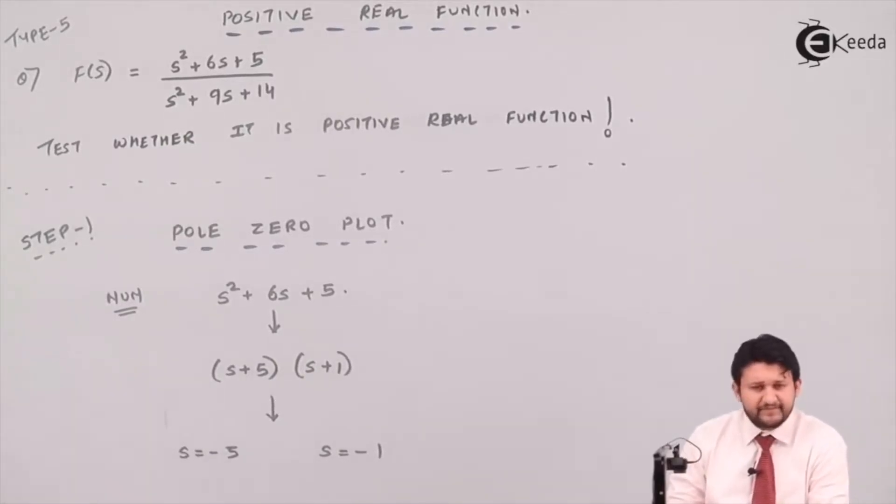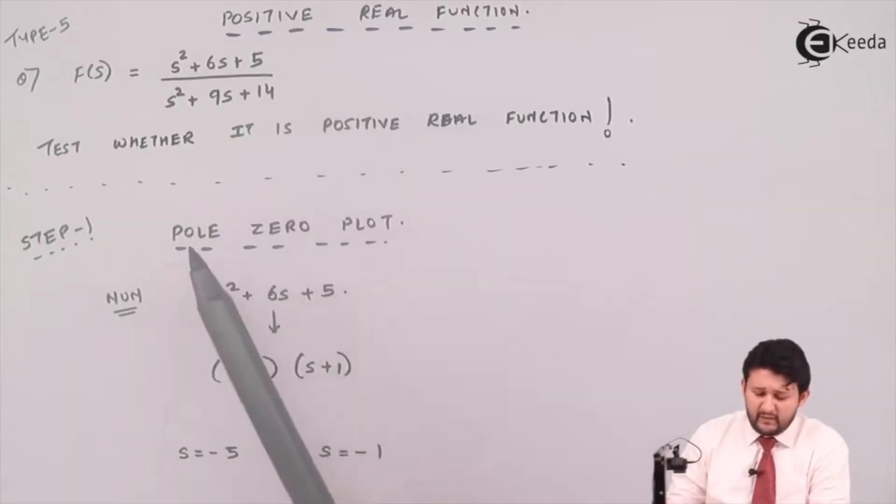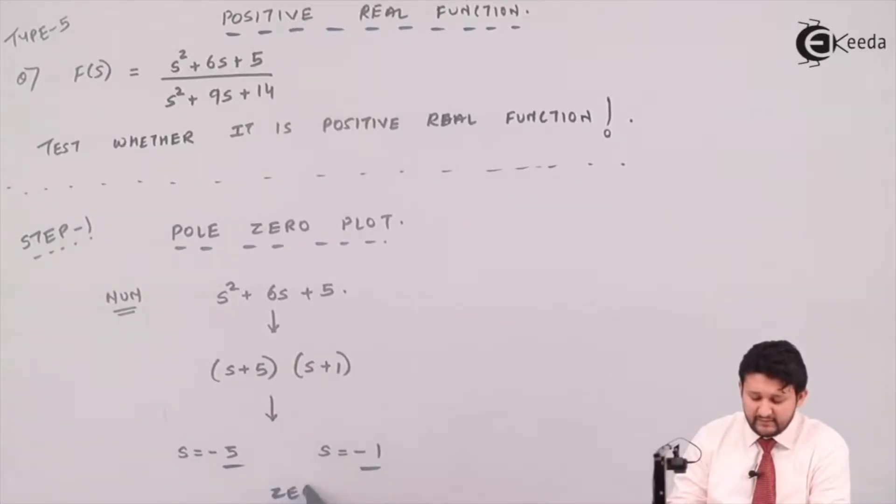Let's have a look. Step one, I need to find the pole zero plot. For finding the pole zero plot, I need the value for s. From numerator, by using a scientific calculator, find the factors. The value which you get from numerator is nothing but zero. You can plot by yourself.